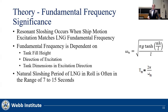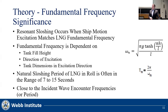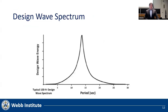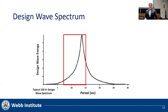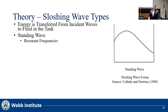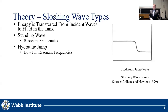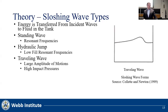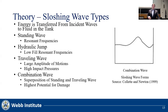For membrane tanks, the natural period of LNG often ranges between 7 and 15 seconds, which is close to the incident wave encounter frequencies. A design wave spectrum shows that the peak energy of the wave falls within the range of LNG sloshing, meaning energy is transferred from incident waves in large volumes to the fluid of the tank. Sloshing can occur as a standing wave at resonant frequencies, a hydraulic jump wave at low fills and resonant frequencies, a traveling wave with large amplitudes and high impact pressures, or a combination wave — a superposition of standing and traveling modes — which has the highest potential for damage.